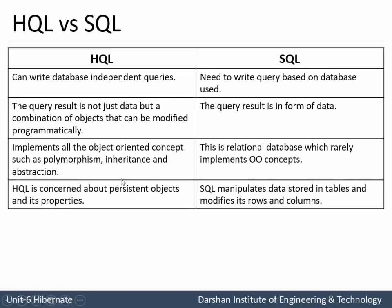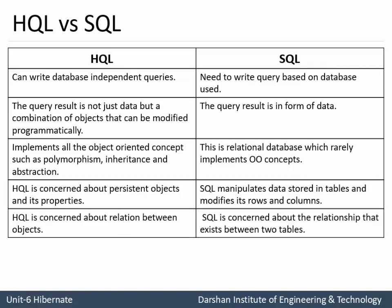Fourth difference: HQL is concerned with persistent objects and their properties — where persistent objects are objects mapped with the RDBMS — while SQL manipulates data stored in tables by modifying rows and columns. Fifth difference: HQL is concerned with relationships between objects, while SQL is concerned with relationships between two tables.